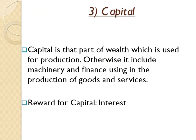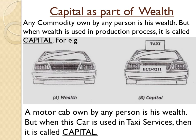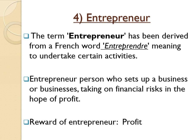Capital is the third factor of production. It refers to the part of wealth used in the production of goods and services. It includes machinery and finance used in production. The reward for capital is known as interest. Capital is also known as wealth — if an individual's wealth is used for investment purposes, it is converted to capital. For example, if a person owns a car and uses it for private purposes, that is part of his wealth. But if he uses the same car as a taxi, that is his capital. So there is a close relationship between wealth and capital.